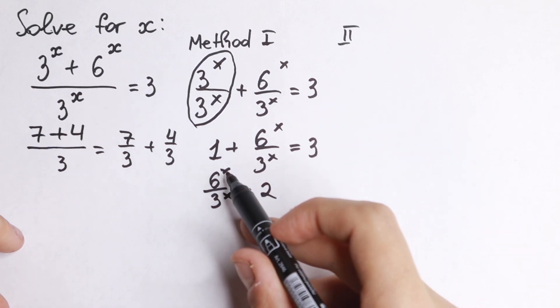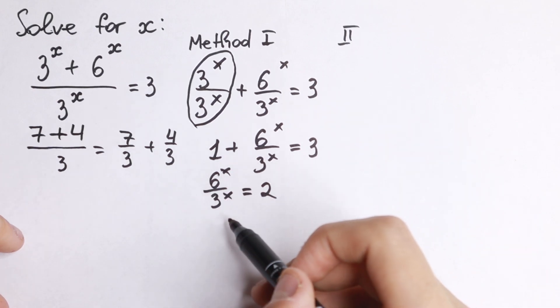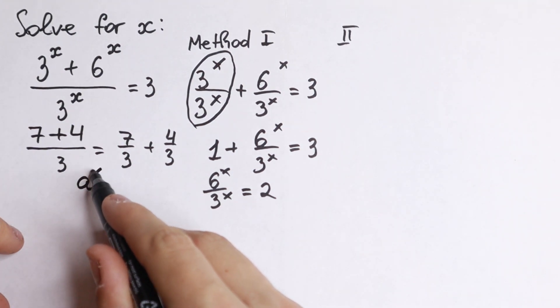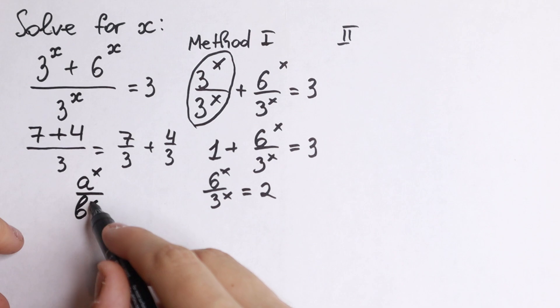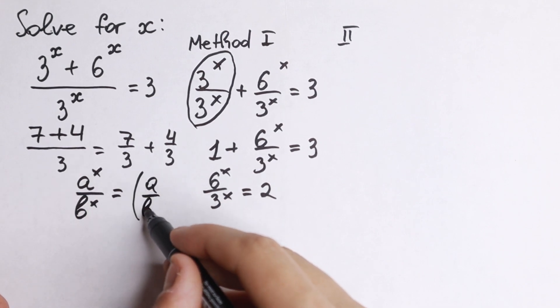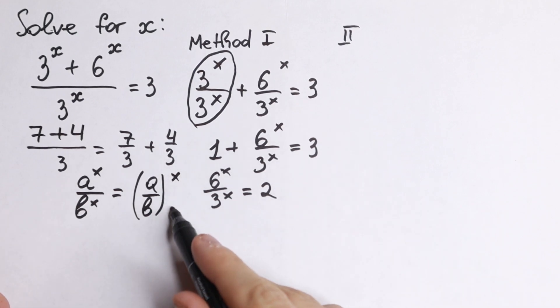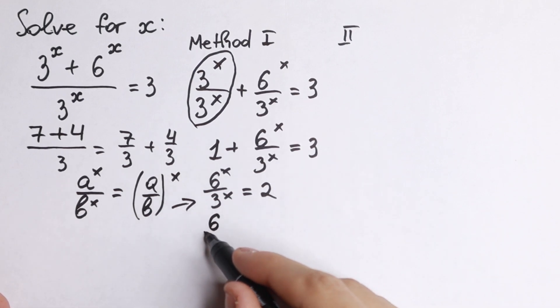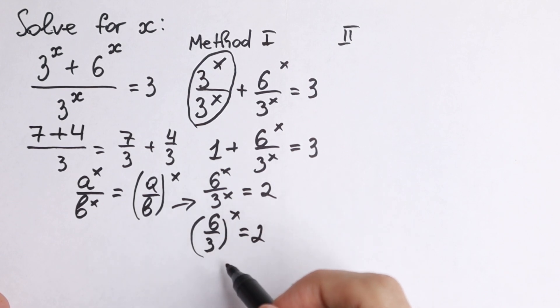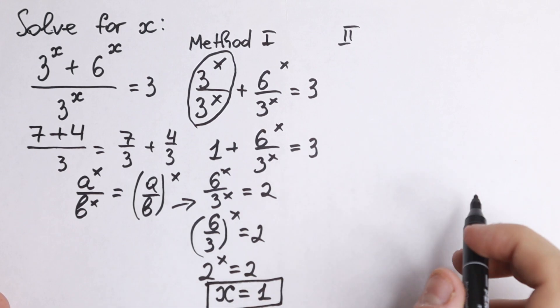Right now we have the same exponent, same powers and different bases. We need to know a really good rule. If we have a to the power x over b to the power x of same powers, you can easily write it as a over b to the power x. Let's apply this rule. We will have 6 over 3 to the power x equal to 2, which is 2 to the x equal to 2, and from here x equal to 1. This is our first method, our first real quick method.